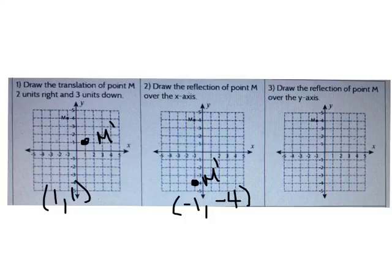Now draw the reflection of point M over the y-axis. Then go ahead and enter the new ordered pair for M' in the blank.